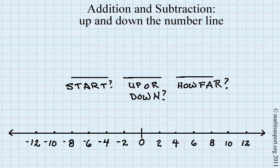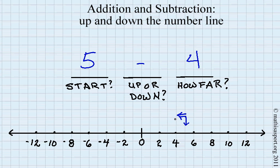Let's try 5 minus 4. Where do we start? We start here at 5. Do we go up or down? We're going down. How far do we go down? Four: 1, 2, 3, 4. That's why our answer is 1.